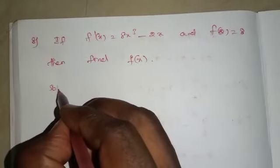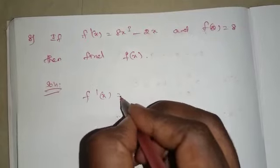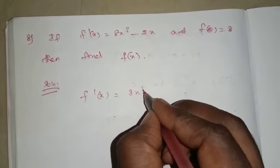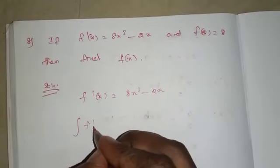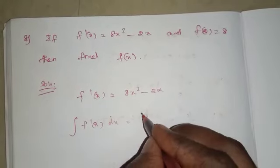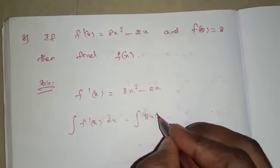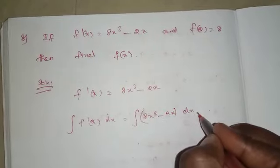Solution: Given f dash of x which is equal to 8x cube minus 2x. Taking integral on both sides, integration of f dash of x dx equals integral of 8x cube minus 2x into dx.